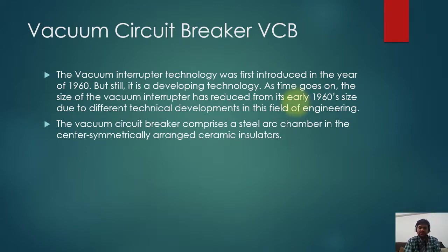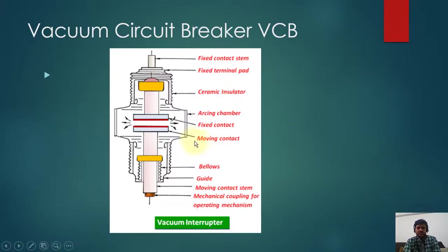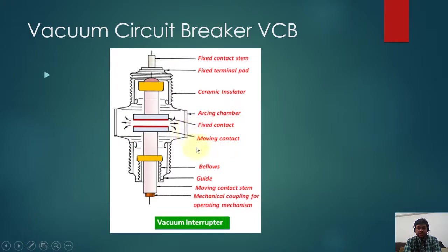Later on, in the 1960s, the technology was finally developed. This diagram is showing the VCB structure. You can see we have two contacts — the contact on the upper side is the fixed contact, and the contact on the lower side is the moving contact. You can see the other parts of the VCB as well. On the outside, you can see the ceramic insulator. This portion is called the arc chamber.